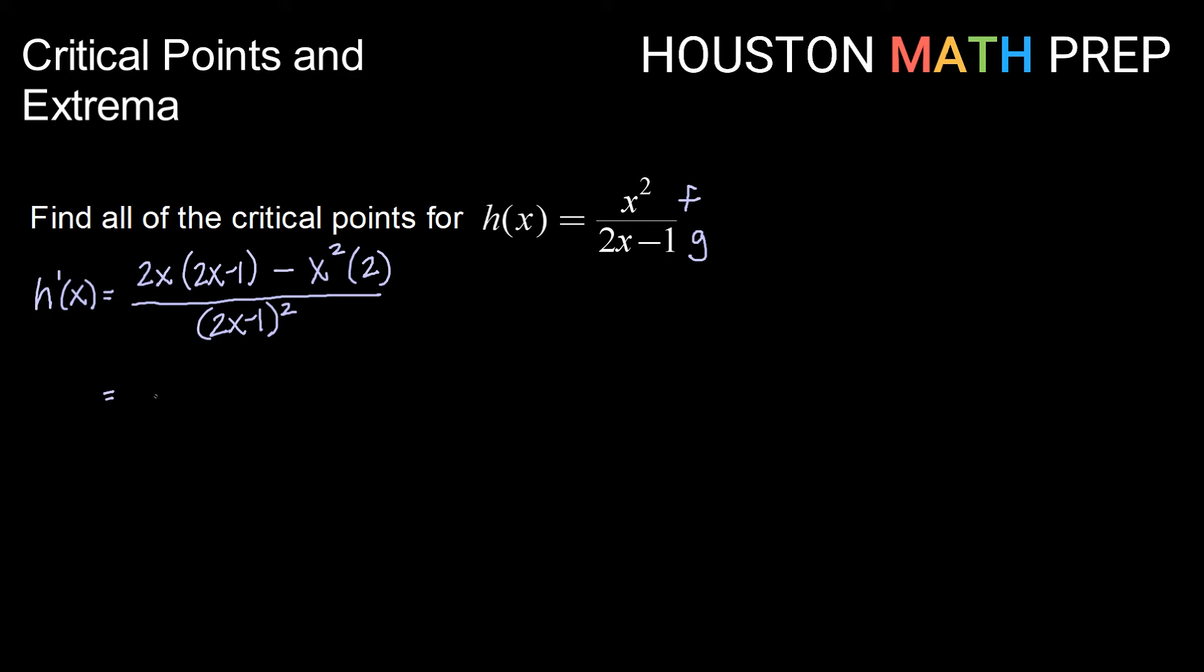Taking a moment to distribute in the numerator so we can simplify a bit, we're going to get 4x squared minus 2x minus 2x squared,